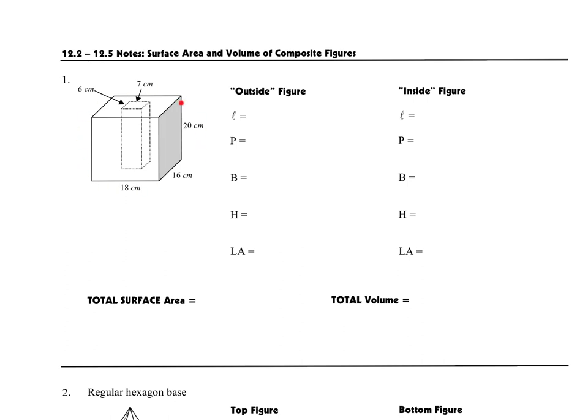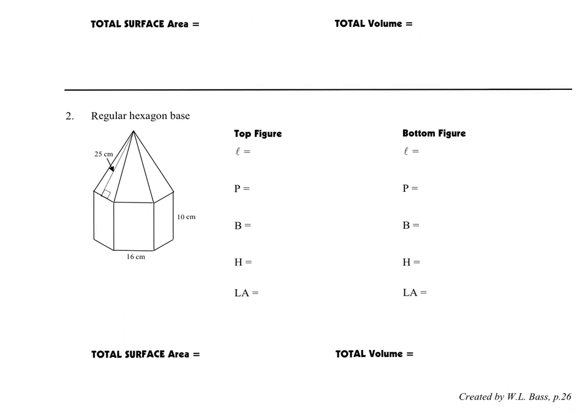So in this case for example this would be a prism with a prism removed and even if the directions don't tell you, you can assume that the height of the outer solid is the same as the height of the inner solid. Similarly when we get down to this bottom one we will be able to assume that the base of the bottom solid will be the same as the base of the top solid.